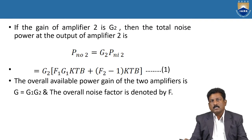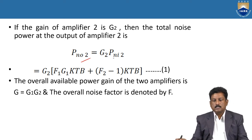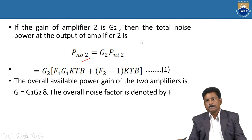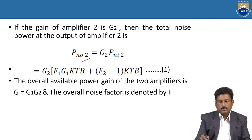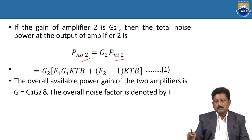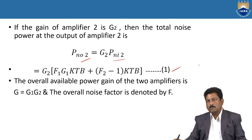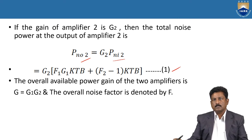If the gain of amplifier 2 is G2, then the total noise power at the output of amplifier 2, PNO2, is given by PNO2 = G2 × PN_in2. Substituting: PNO2 = G2 × [F1·G1·KTP + (F2 − 1)·KTP]. The overall available power gain of the two amplifiers is G = G1 × G2, and the overall noise factor is defined by F.